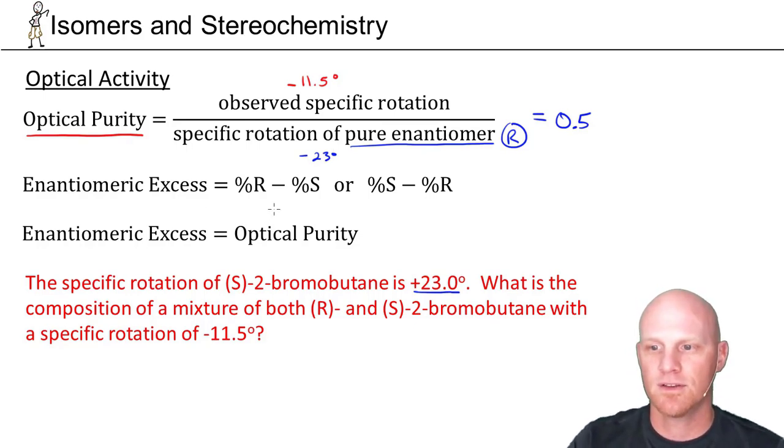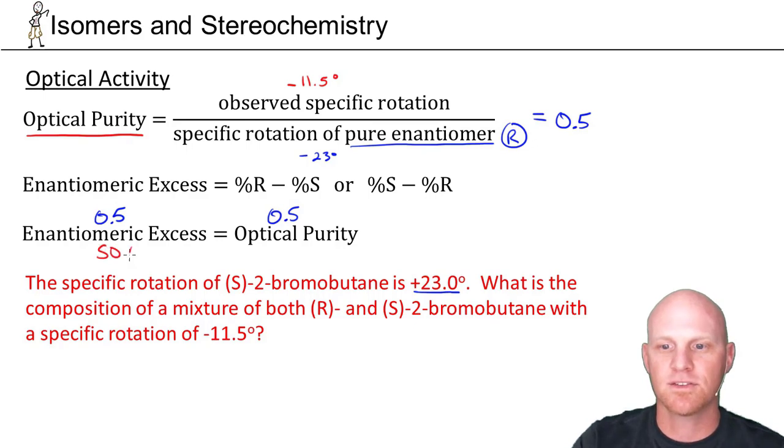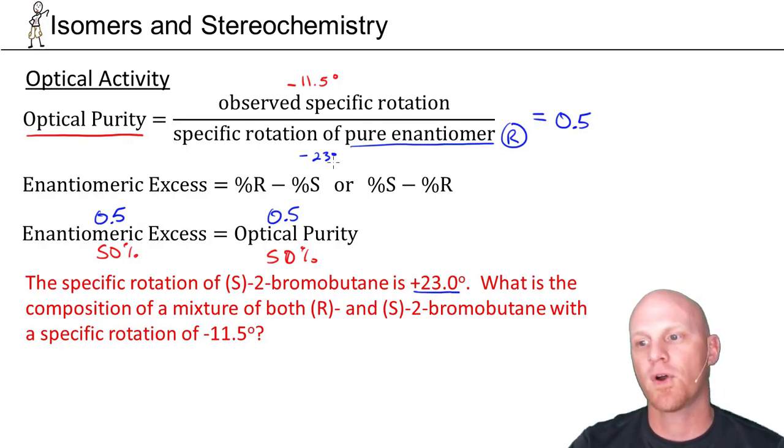It turns out that that optical purity, 0.5, is also equal to what we call the enantiomeric excess. If we express that as a percentage, we see that our optical purity is only 50% of the pure R isomer.